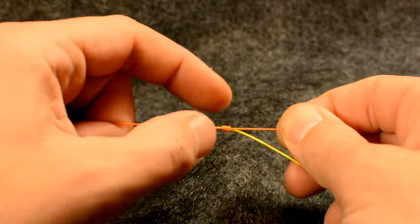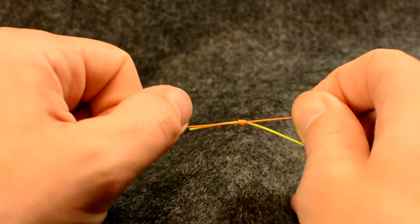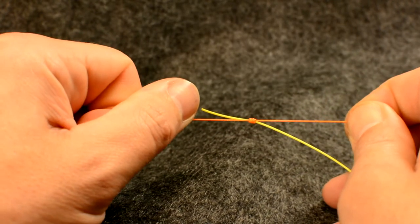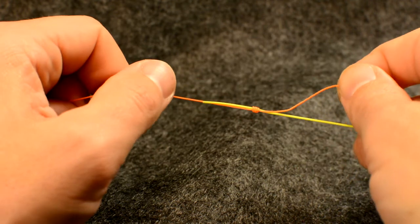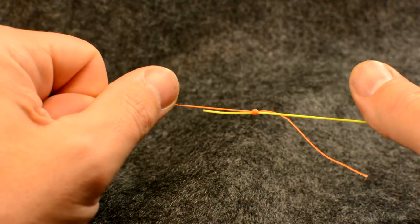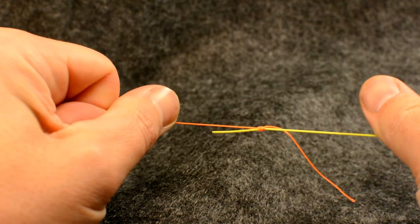Now you can moisten the knot and draw tightly on both ends to secure the knot. You can further tighten the knot by drawing on the fly line and the backing.